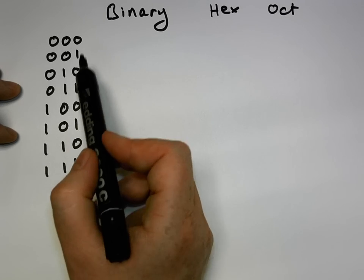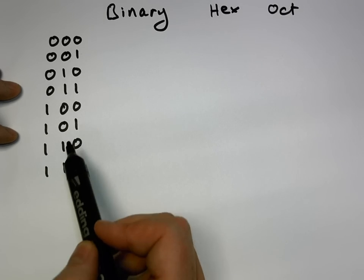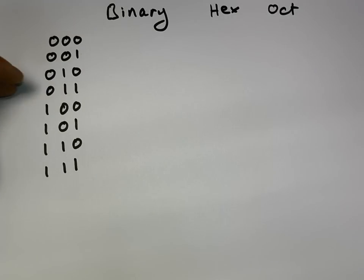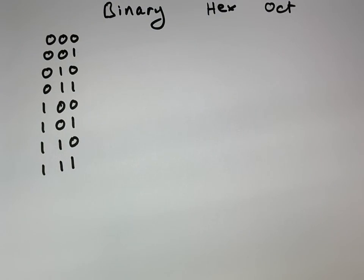We should end up with eight elements. So we count them, one through eight. Eight characters means that we have our full alphabet for the octal number system.